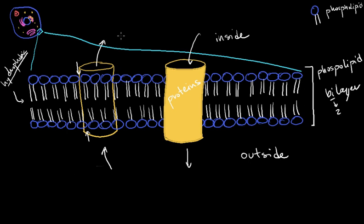And it's really things that are too big or have too much of a charge to really get through these phospholipids. They've got to go through these proteins. They're kind of like tunnels that let things in and out of the cell.